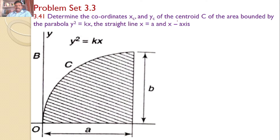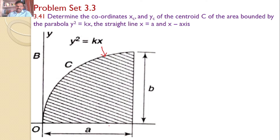Determine the coordinates x_c and y_c of the centroid C of the area bounded by the parabola y² = kx, the line x = a, and the x-axis. We need to find the centroid for this area where the curve is given by y² = kx, bounded by a horizontal and a vertical line x = a.